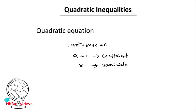In this video, we will talk about coefficients. A is the coefficient of x², b is the coefficient of x, and c is the coefficient of x to the power of 0. Here, c is a constant — it means x to the power of 0 is 1. So we have x² plus bx plus c is equal to 0 — we have a quadratic equation.